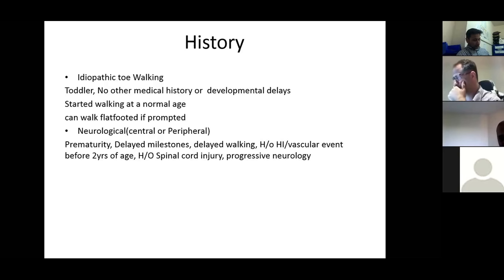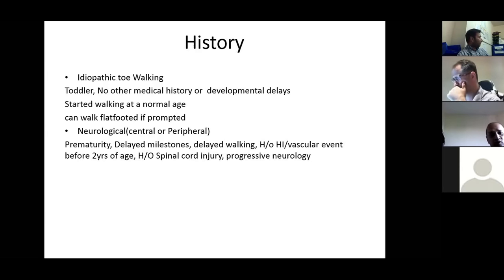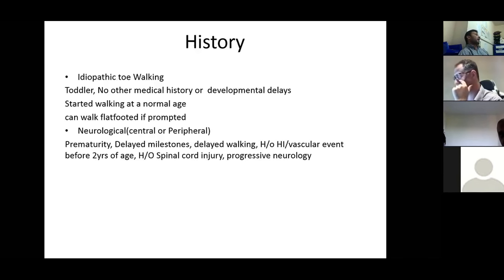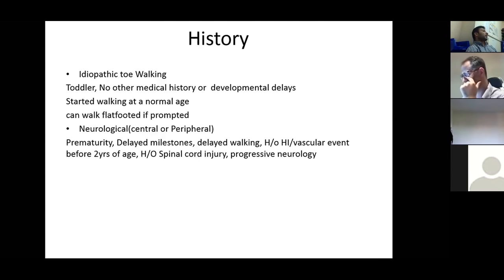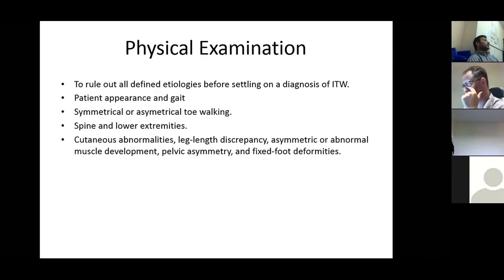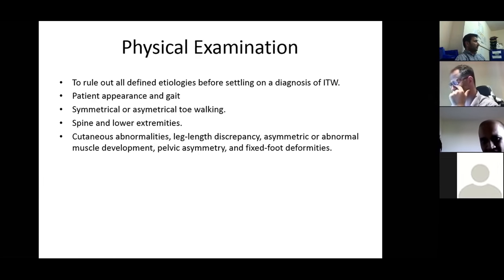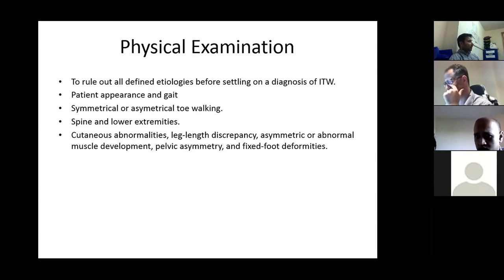For neuromuscular conditions, the history may reveal premature birth, delayed milestones, delayed walking, history of head injury or vascular event before two years of age, or history of spinal cord injury with progressive neurology. These are key points to ask when suspecting neurological causes.